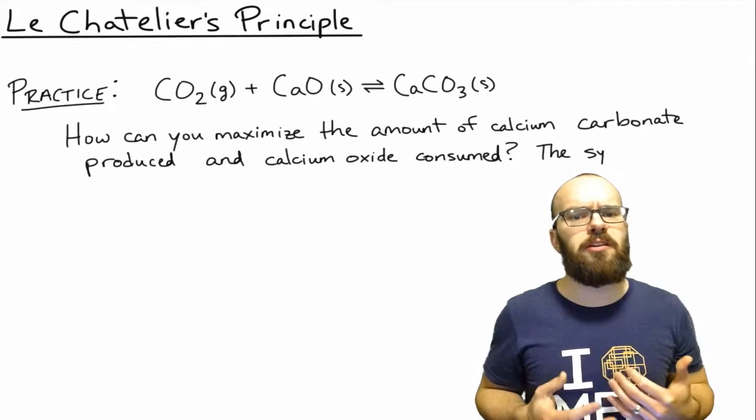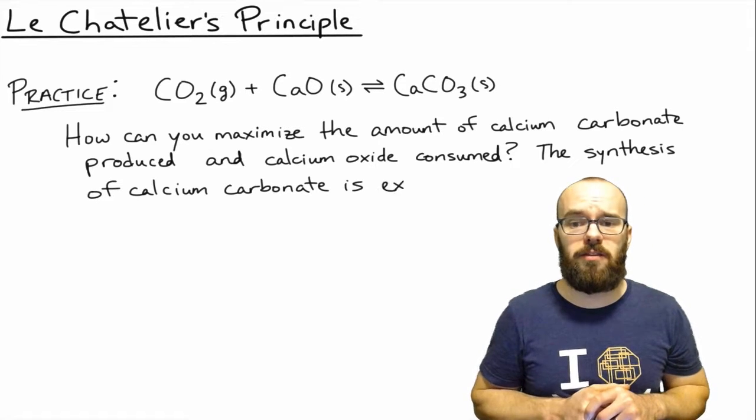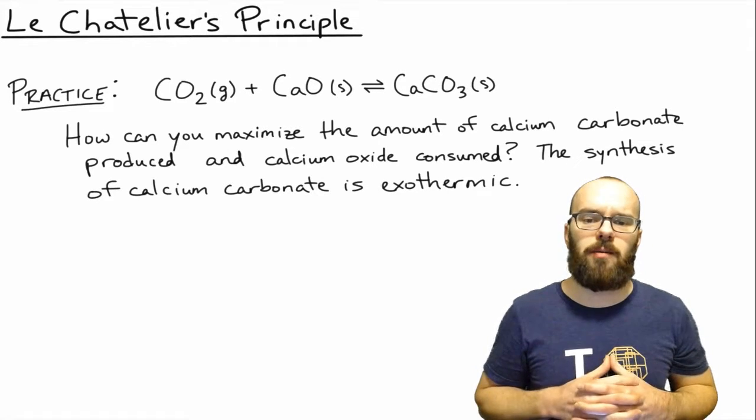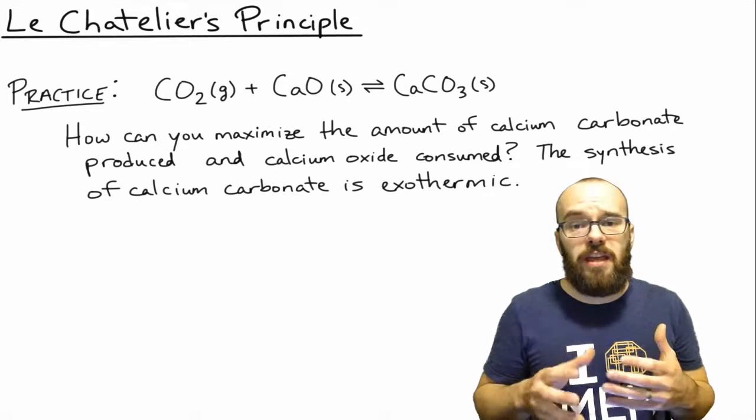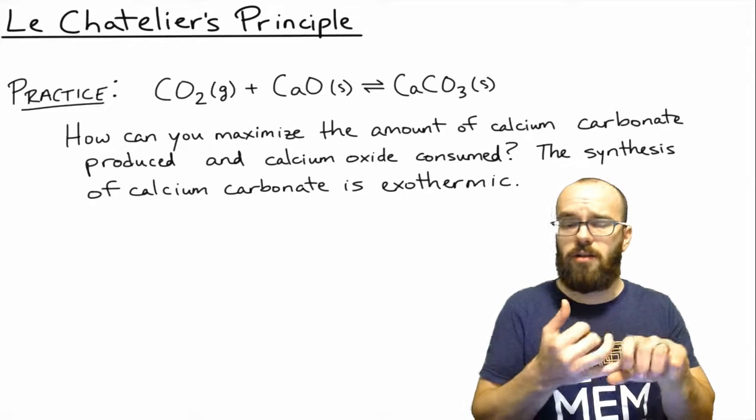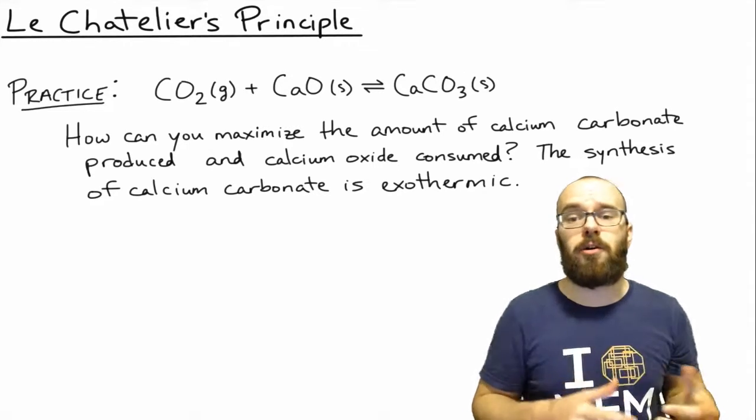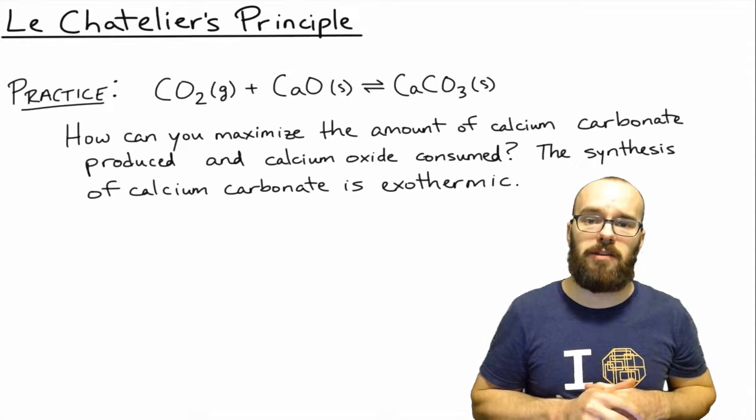Your challenge is, how can you maximize the amount of calcium carbonate produced and calcium oxide consumed? The synthesis of calcium carbonate is exothermic. So think about this in terms of the three things we've talked about. How can you change concentration? How can you change pressure? And how can you change the temperature in order to maximize the product calcium carbonate?